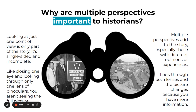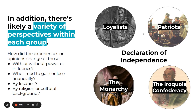For example, you have Eisenhower signing the Interstate Highway System, and here's the actual building of it affecting the local community. In addition, there's a variety of perspectives within each group. So when you're talking about the Revolutionary War or the Declaration of Independence...